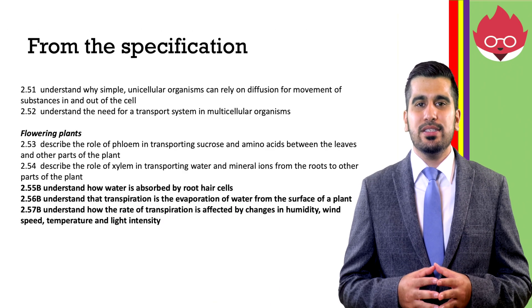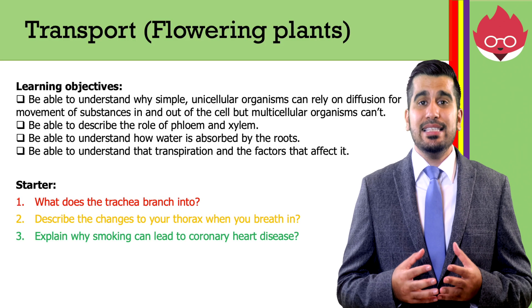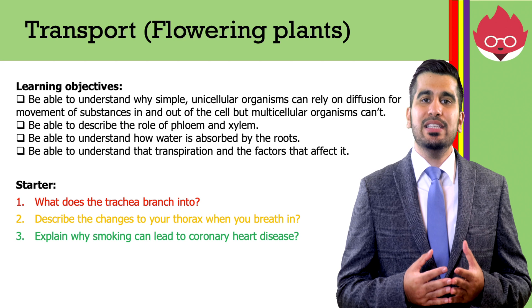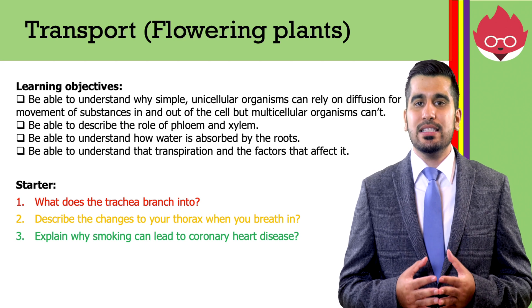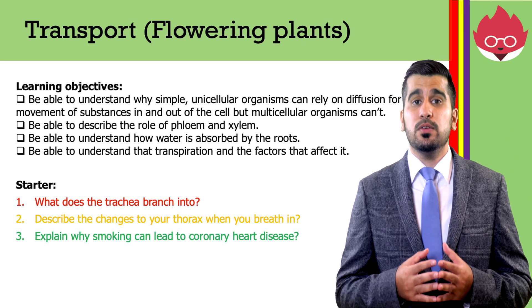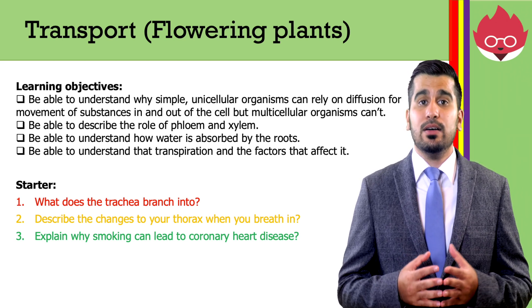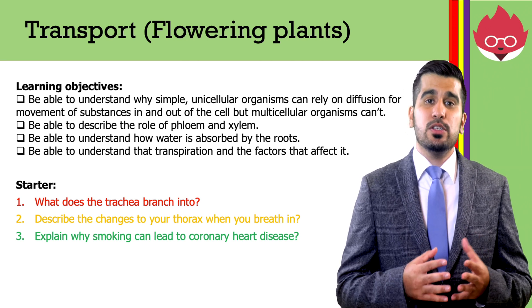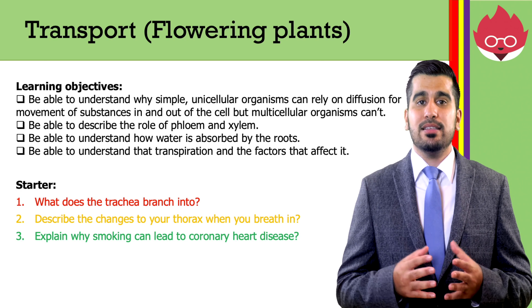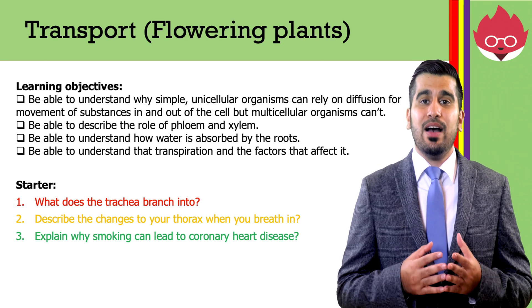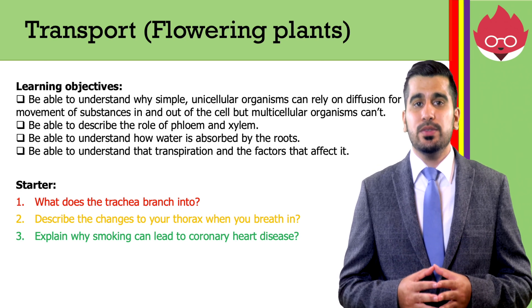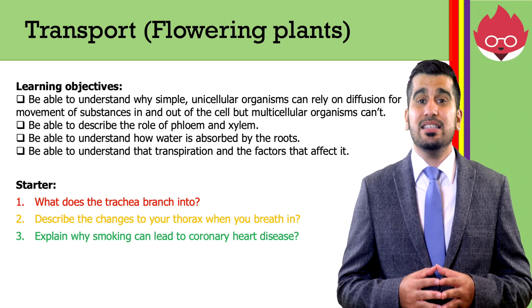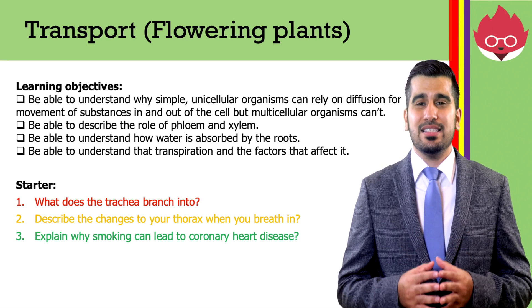These are the specification points we'll be covering. In today's lesson, we want to be able to understand why simple unicellular organisms can rely on diffusion for movement of substances in and out of the cell, but multicellular organisms can't. Be able to describe the role of the phloem and the xylem, understand how water is absorbed by the roots, and define transpiration and understand the factors that affect it.